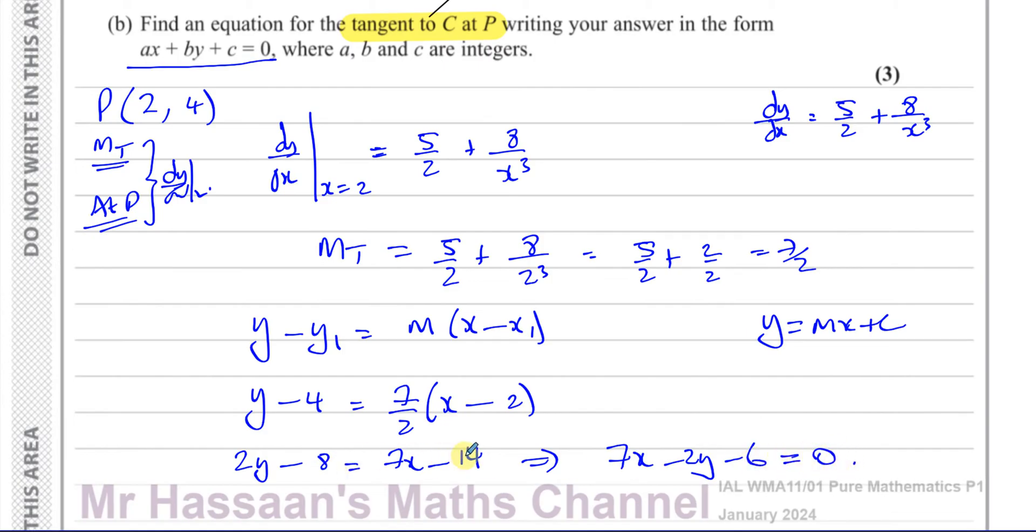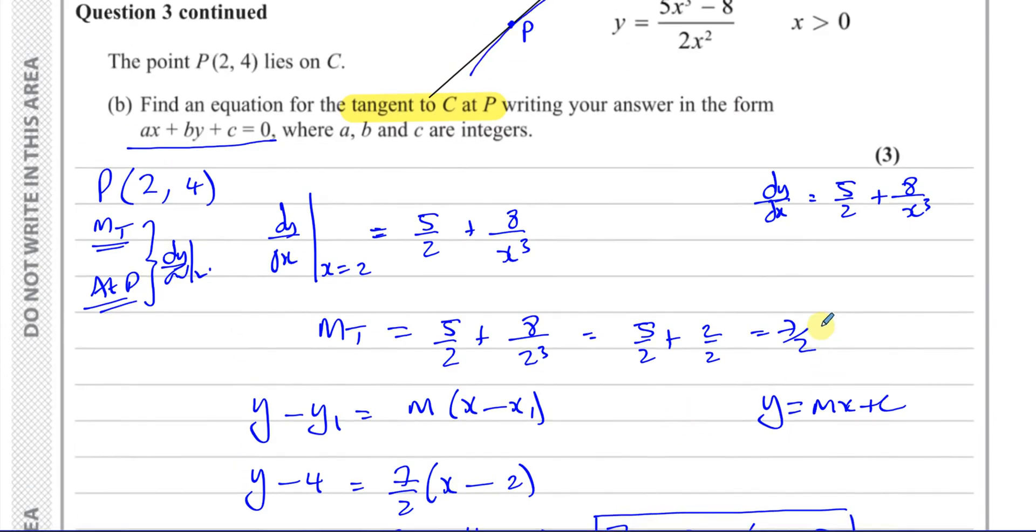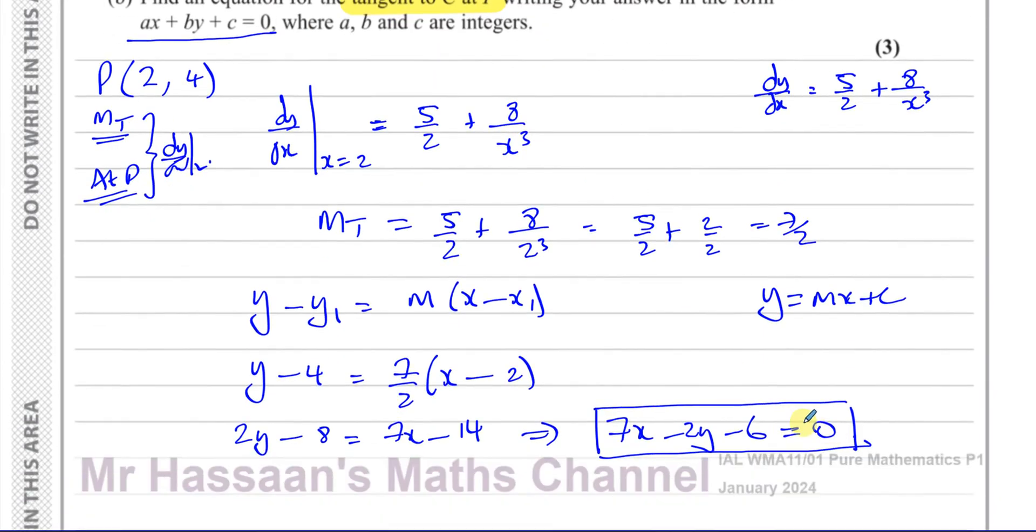So 7x minus 2y minus 6 equals 0 and that is the equation of the tangent to the curve at C. So there's the answer.